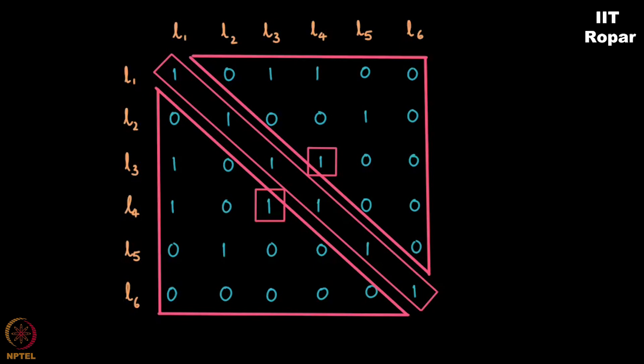That is because LI LJ, LJ LI both have either 1 or 0. That is because two lines are either parallel to each other or they are not parallel to each other.